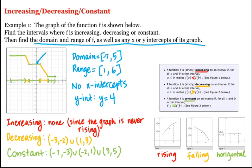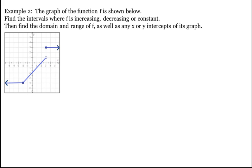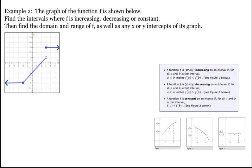Let's look at another example. Here's the graph of f. Again, we'll determine the intervals where f is increasing, decreasing, or constant, and then find the domain, range, and any x or y intercepts. A function is increasing on an interval if for every a and b in that interval with a less than b, then f(a) is less than f(b), and the graph will be rising. A function is decreasing if f(a) is greater than f(b), and the graph is falling. A function is constant if f(a) equals f(b), and the graph is horizontal on that interval.